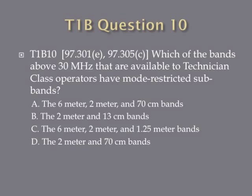Question 10. Which of the bands above 30 MHz that are available to technician class operators have mode-restricted subbands? A. The 6-meter, 2-meter, and 70-centimeter bands. B. The 2-meter and 13-centimeter bands. C. The 6-meter, 2-meter, and 1.25-meter bands. Or D. The 2-meter and 70-centimeter bands.